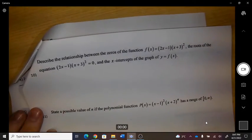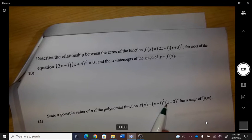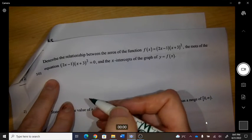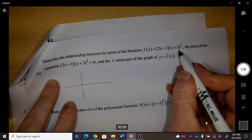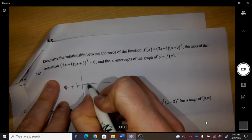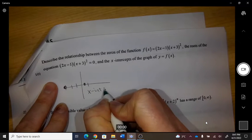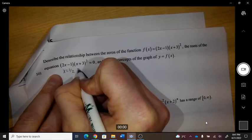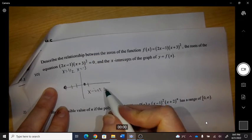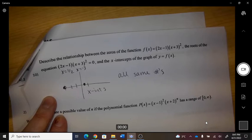Describing the relationships between the zeros of this function and the roots and the x-intercepts - that all means the same thing. So the x-intercepts, for instance, this would be negative 3 and this would be one-half. And then if I was to solve this, it would be x equals one-half and x equals negative 3. They're all the same numbers, they all mean the same thing.